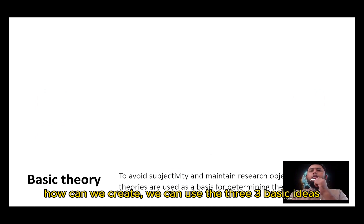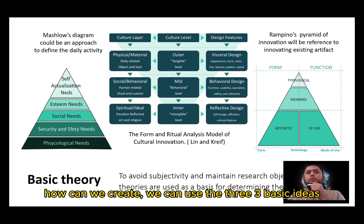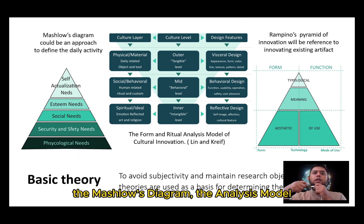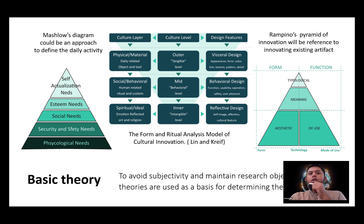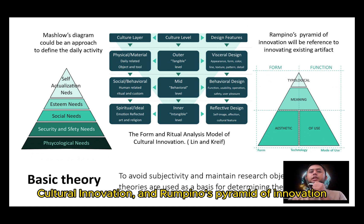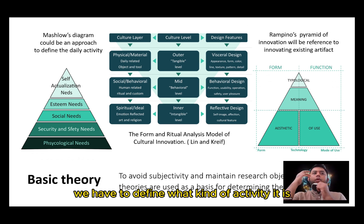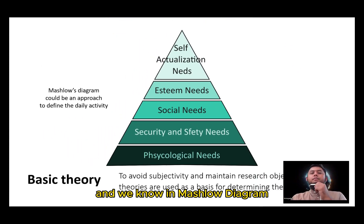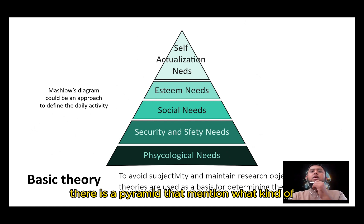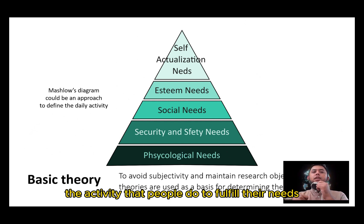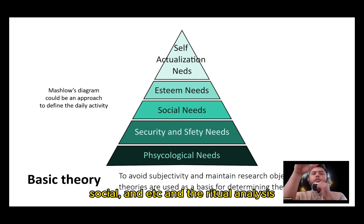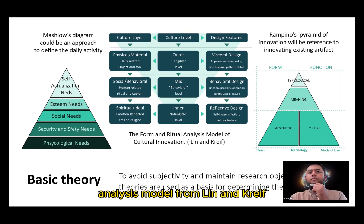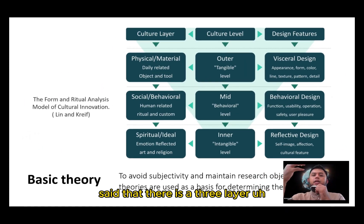We can use three basic ideas: the Maslow diagram, the ritual analysis model, and Rampino's pyramid of innovation. In the first step, we have to define what kind of activities people perform. In the Maslow diagram, there is a pyramid mentioning what kind of activities people do to fulfill their needs — psychology, security, social, and so on. The ritual analysis model from Lynn and Kreeb states there are three levels of culture.